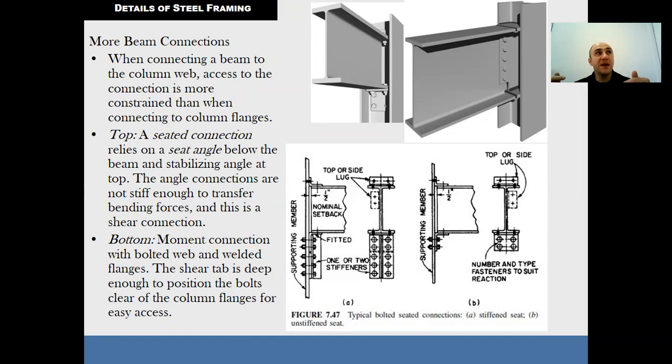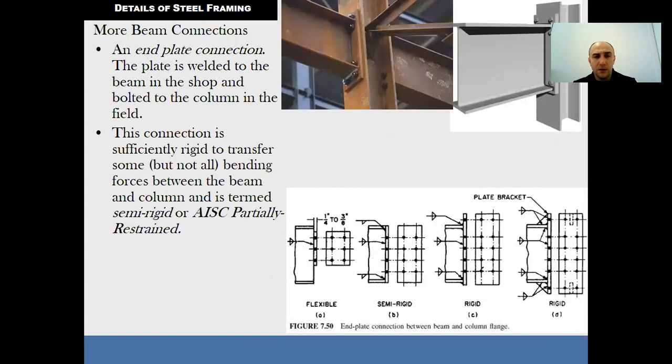Strength of the beam web usually is not the deciding factor because of ample seat area. When the legs are larger than five inches in width, eccentricity should be considered. Beam connections consist not only of stiffened and unstiffened seats, but also end plate connections.